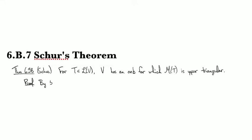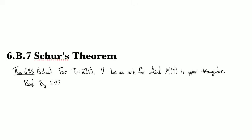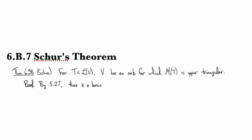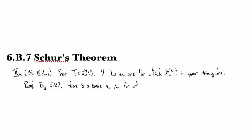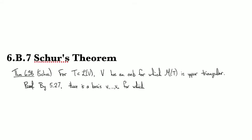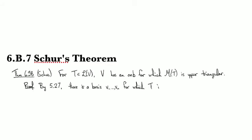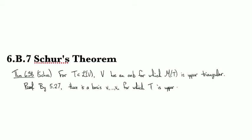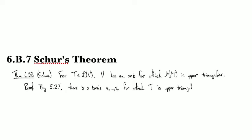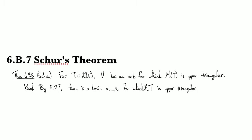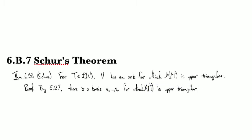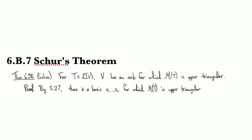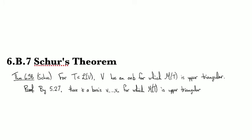By theorem 5.27, there is a basis for which T is upper triangular — or in other words, for which M(T) is upper triangular.